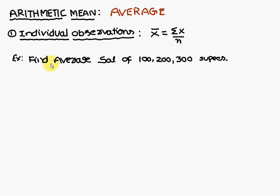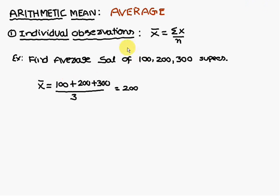A typical individual observations problem looks like: find the average salary of 100, 200, and 300 rupees. The formula says x̄ = Σx/n, that is summation of the salaries divided by the number of persons. So 100 + 200 + 300 divided by 3 gives us 200. Therefore the average salary of these three values is 200 rupees.